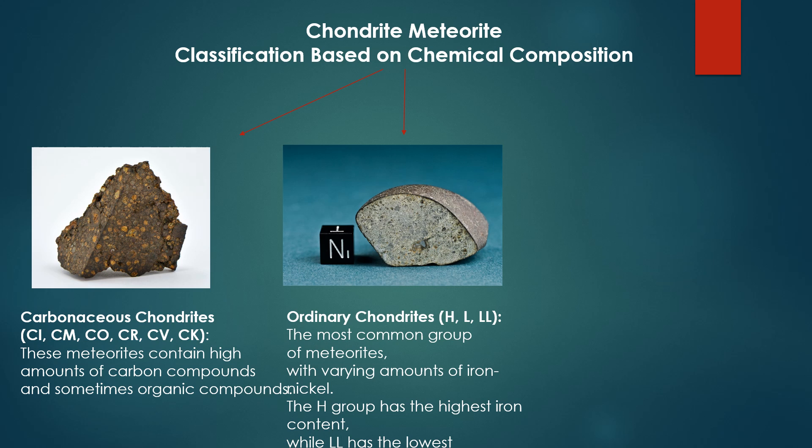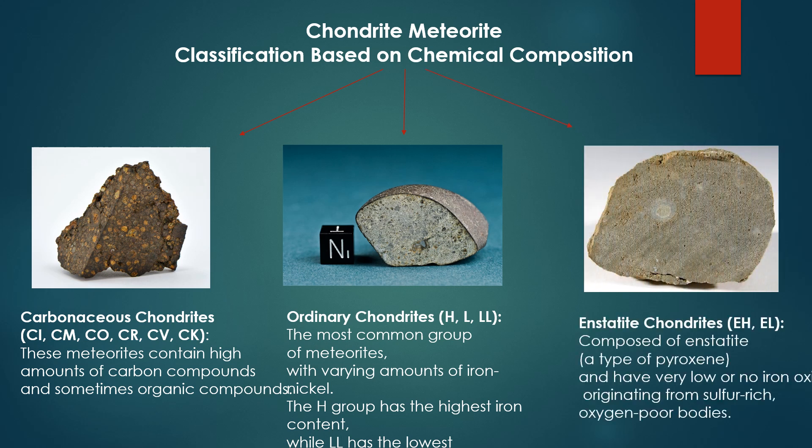The H group has the highest iron content while LL has the lowest. Enstatite chondrites (EH, EL): composed of enstatite, a type of pyroxene, and have very low or no iron oxide, originating from sulfur-rich, oxygen-poor bodies.